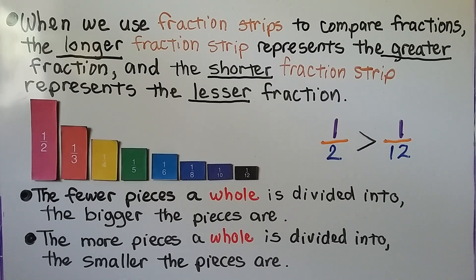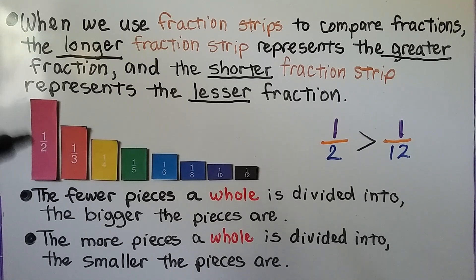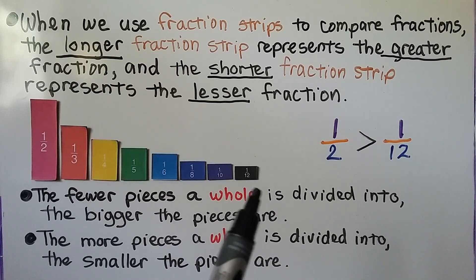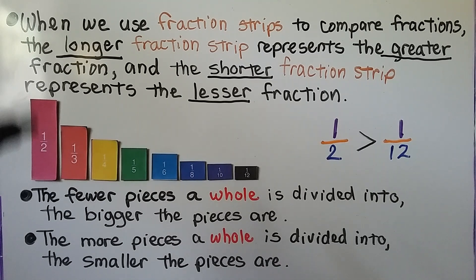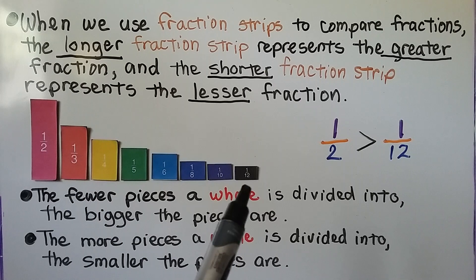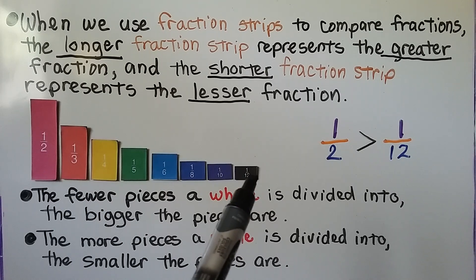The fewer pieces a whole is divided into, the bigger the pieces are; and the more pieces a whole is divided into, the smaller the pieces are. When we have one-half, it only takes two of these pieces to make a whole. When we have one-twelfth, it takes twelve of these to make a whole.